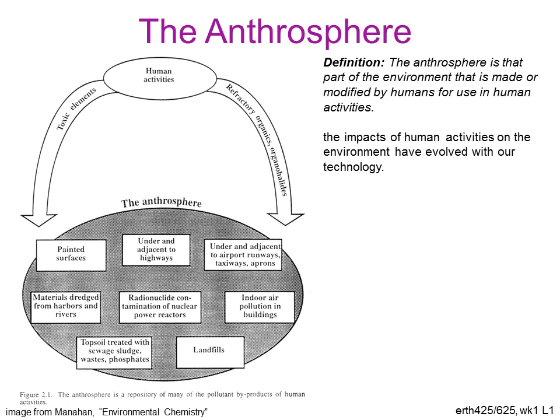Think about the classroom that we meet in for this course. That's an entirely constructed environment that is physically made of man-made materials as well as a gaseous envelope, so there's an intersection with the atmosphere. And when we as humans are in that room, we are an intersection of the biosphere with the anthrosphere. But you can also imagine a more gray or diffuse zone in the anthrosphere, such as some of the things depicted in this diagram shown here.